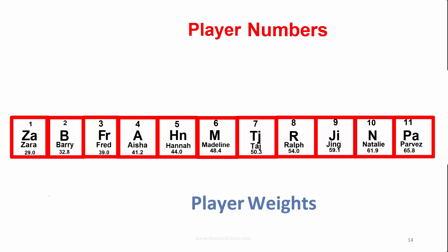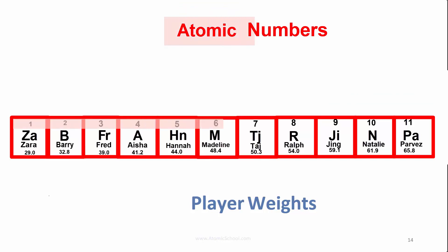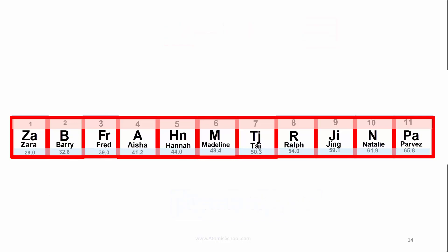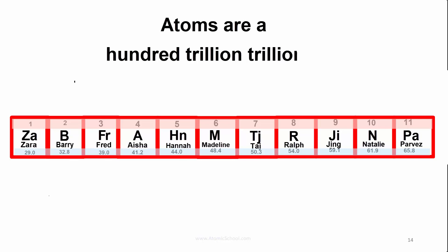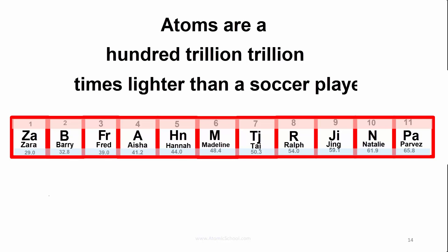The player numbers of the soccer team are like atomic numbers, and their player weights are like the atomic weights, except of course on a much bigger scale. In the next video, we'll change our soccer team to an atom team and look at a much smaller scale. Atoms are a hundred trillion trillion times lighter than a soccer player.